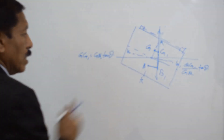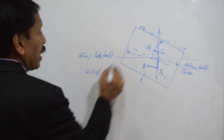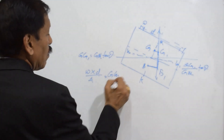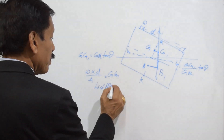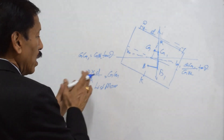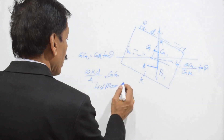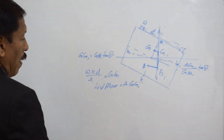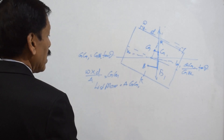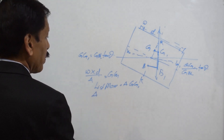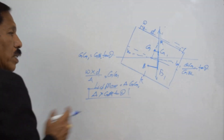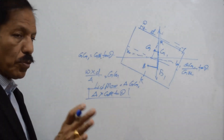So this formula can be used for small angles of list: GG1 upon GM equals tan theta, which means GG1 equals GM·tan theta. GG1 is caused by the shift of weight W through a distance D: W into D divided by displacement equals GG1, which means the listing moment equals delta·GG1. Since the listing moment equals delta·GG1, we can say that listing moment equals delta into GM·tan theta.